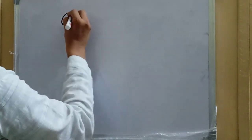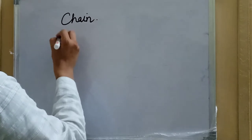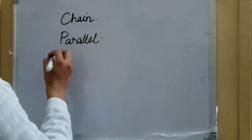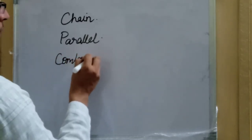Next we have chain dimensioning, parallel dimensioning, and combined dimensioning. In chain dimensioning, the dimensions are done just like a chain — each link attached to the next. In parallel dimensioning, we take a reference line and all dimensions are measured from that reference line, with the dimension lines parallel to each other. In combined dimensioning, some portions use chain dimensioning and other portions use parallel dimensioning.